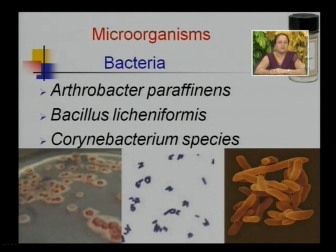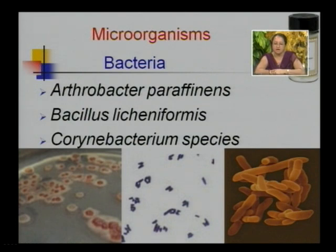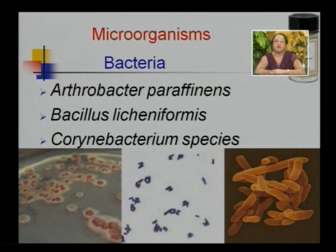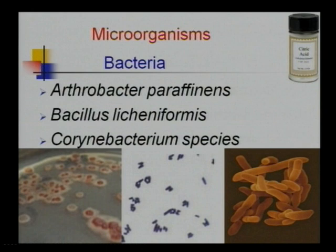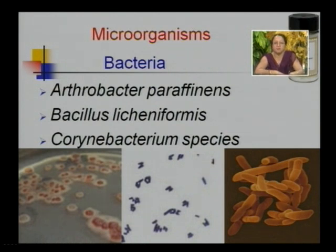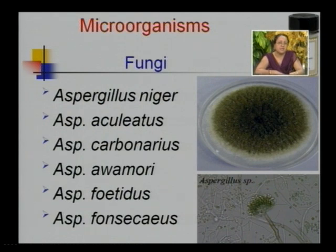Coming to the microorganisms involved in citric acid fermentation: bacteria, fungi and yeast are the different organisms used for citric acid production. Most organisms are not able to produce commercially acceptable yields due to the fact that citric acid is an energy metabolite and its accumulation occurs under conditions of drastic imbalance. Bacteria used include Arthrobacter paraffinins, Bacillus licheniformis, and Corynebacterium species. Fungi used include Aspergillus niger, Aspergillus aculeatus, Aspergillus carbonarius, Aspergillus awamori, Aspergillus foetidus, and Aspergillus fonsecaeus, all of which give high yield of citric acid.